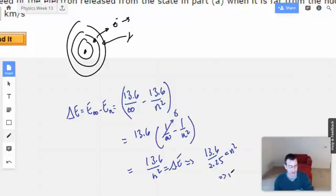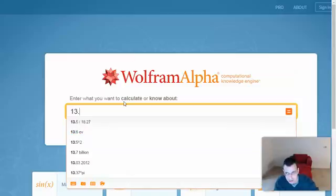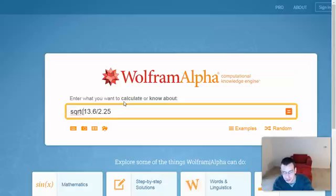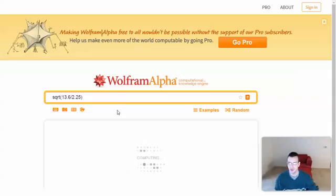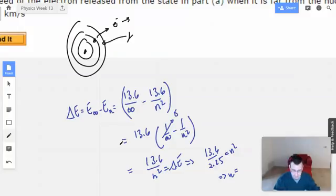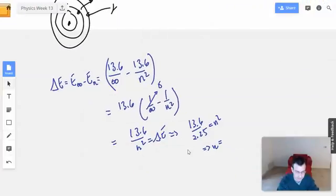So I'm going to say that 13.6 divided by 2.25 equals n squared. Therefore, n equals, alright, 13.6 divided by 2.25, and then that's n squared, so we'll want to square root this guy. And we get 2.46.